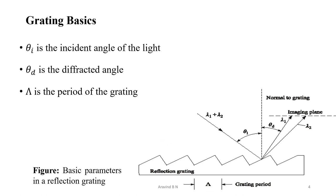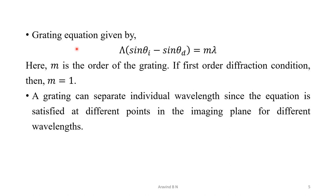When it comes to the transmission grating, it consists of a series of equally spaced slits. The spacing between two adjacent slits is known as the pitch of the grating. Constructive interference at wavelength lambda occurs in an imaging plane when the rays diffracted at angle theta d satisfy the grating equation: lambda times (sin theta i minus sin theta d) equals m lambda, where m is the order of the grating. For first order diffraction, m equals 1. A grating can separate individual wavelengths since the equation is satisfied at different points in the imaging plane for different wavelengths.